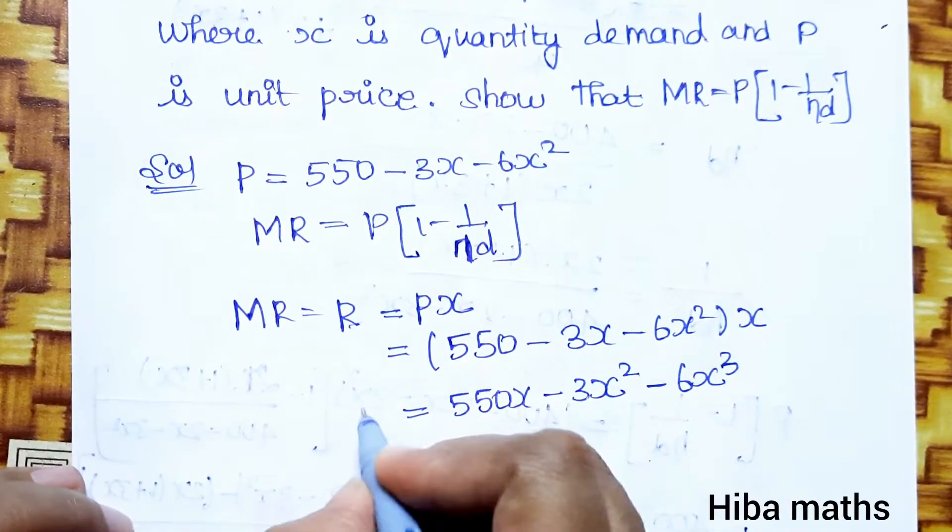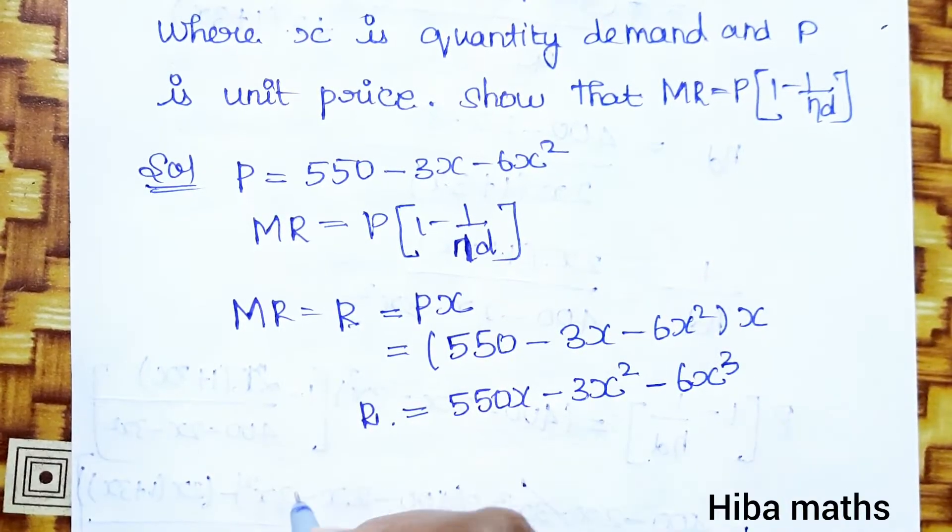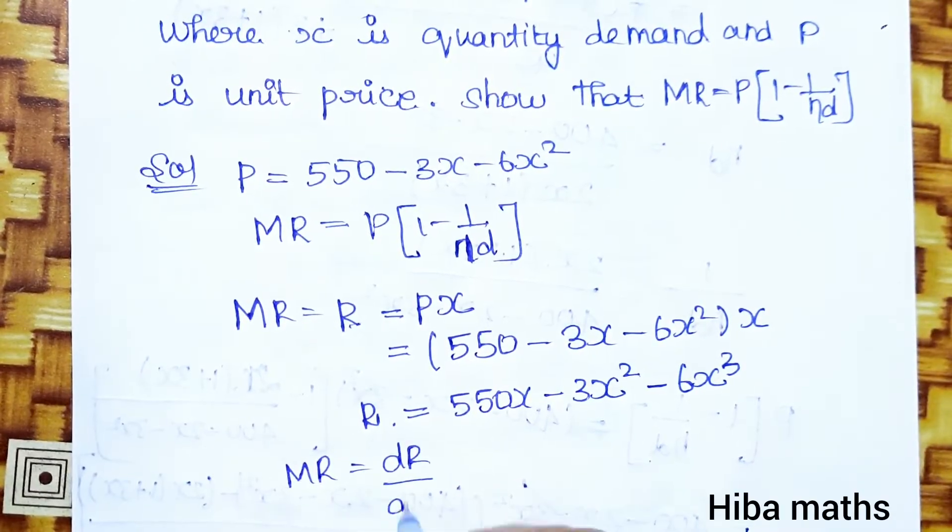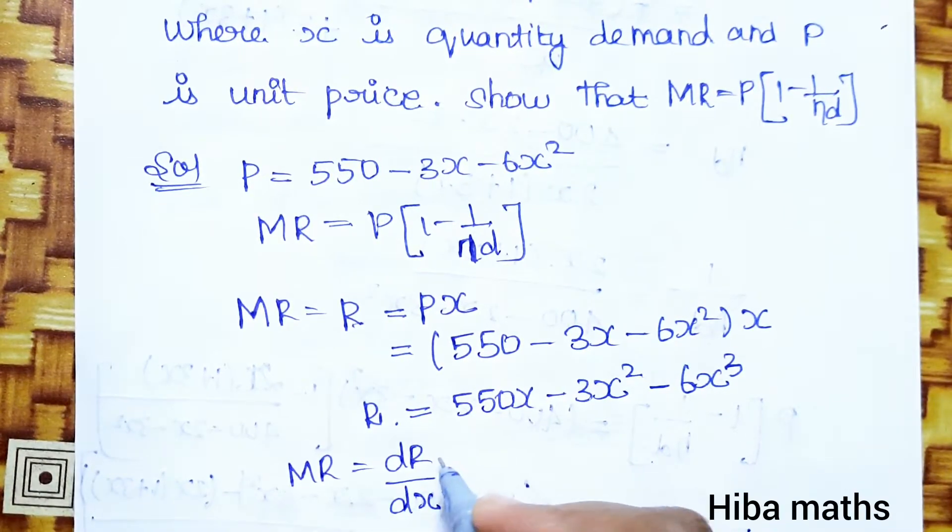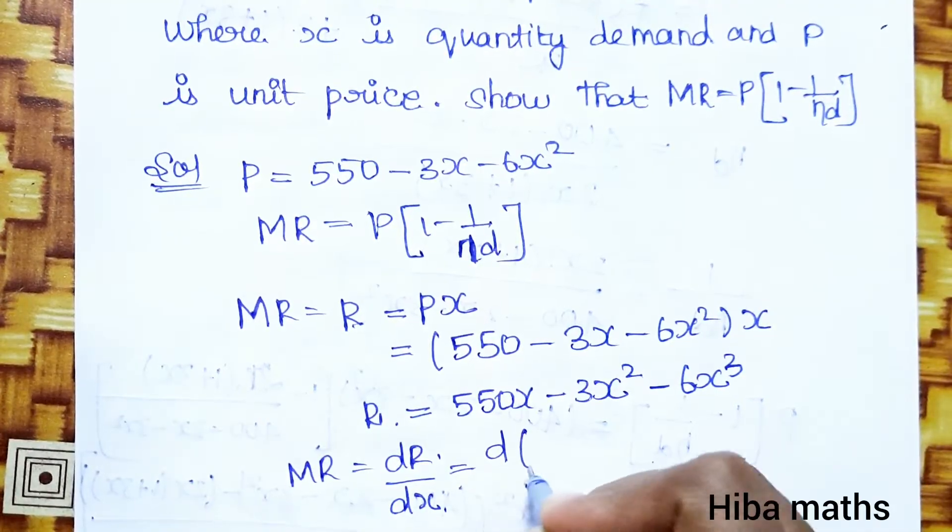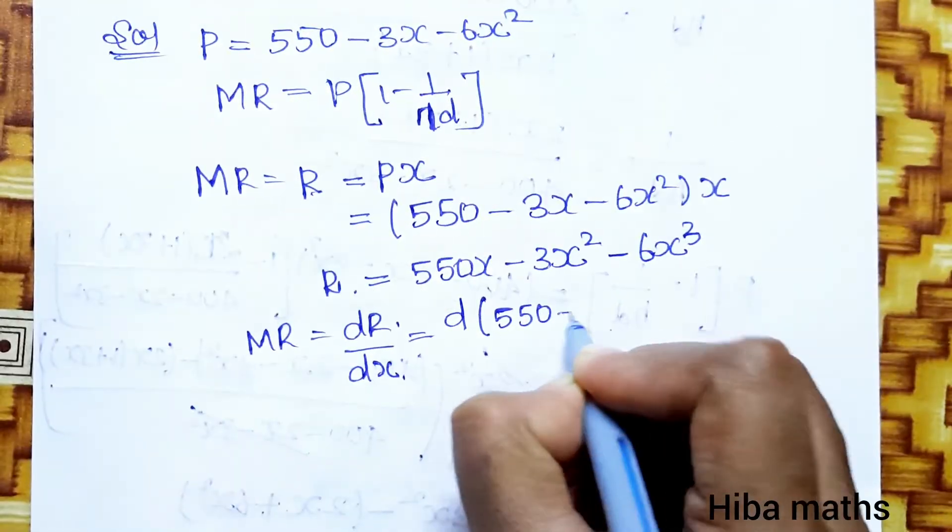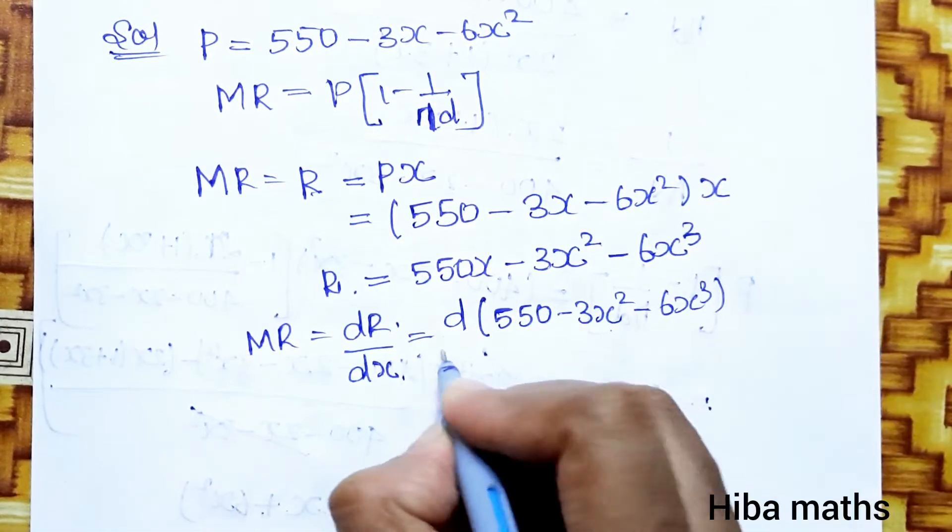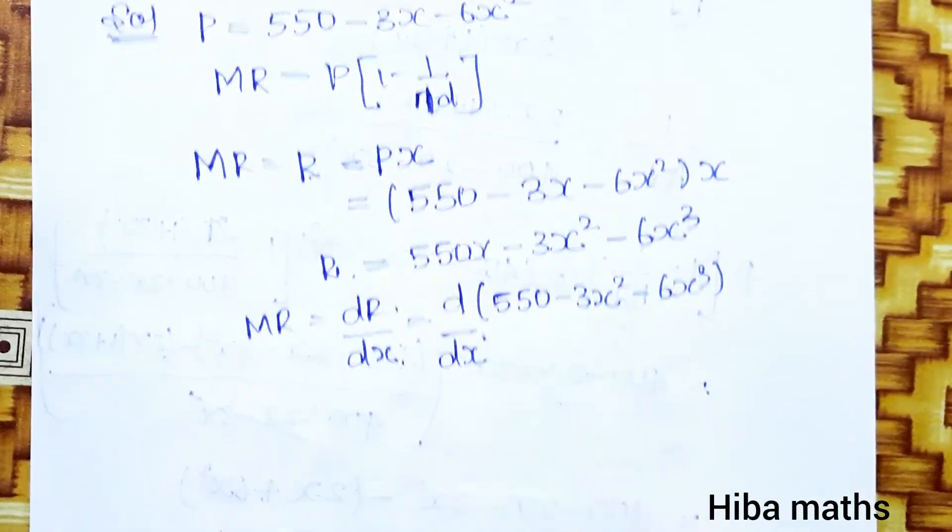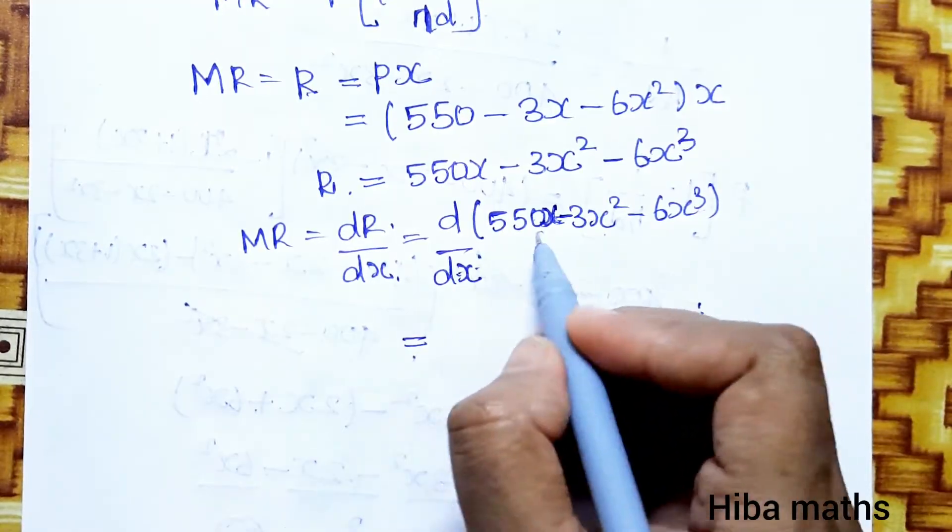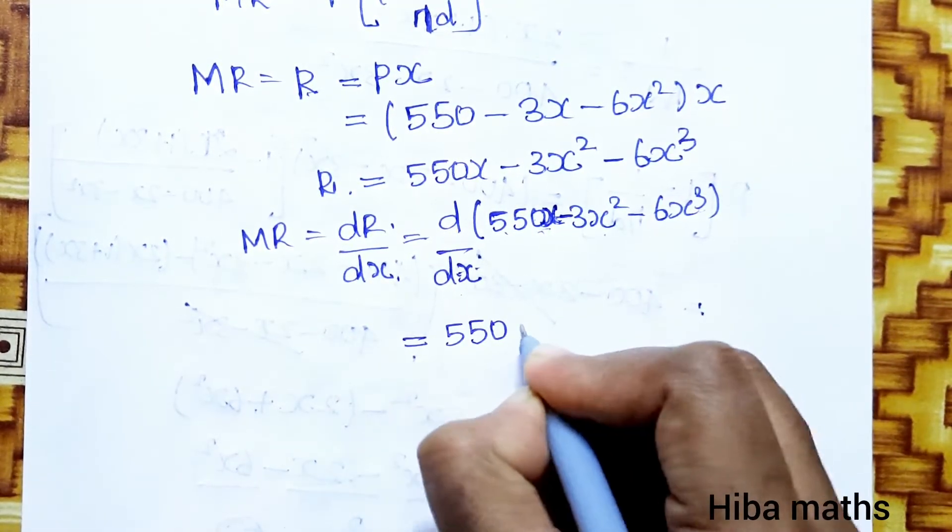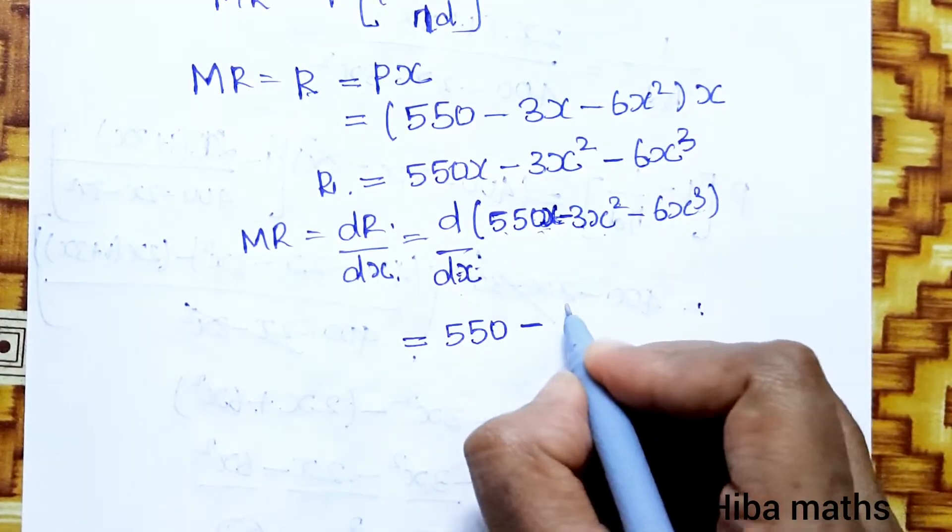Now if we take MR, dR by dx, differentiating R with respect to x, differentiating R 550x minus 3x square minus 6x cube with respect to x. If we differentiate, we get 550 minus 6x minus 18x square.